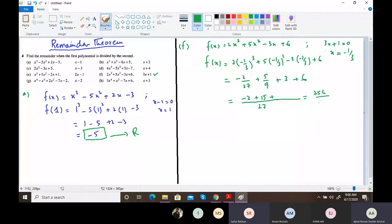It's 256 divided by 27 all together. 256 divided by 27, this is 243 if I am not wrong, so this is your remainder in this case.